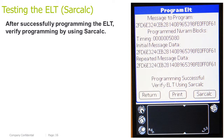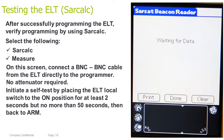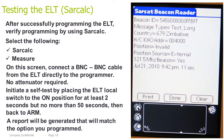Testing the ELT using SAR-Calc software. After successfully programming the ELT, verify programming by using SAR-Calc. Select SAR-Calc and Measure, then Attenuator. On this screen, connect a BNC to BNC cable from the ELT directly to the programmer — no attenuator is required. Initiate a self-test by placing the ELT local switch to the ON position for at least 2 seconds, but no more than 50 seconds, then back to ARM. A report will be generated that will match the option you programmed.